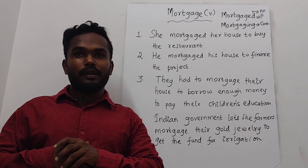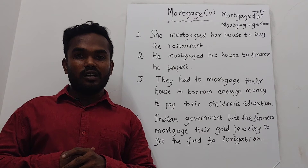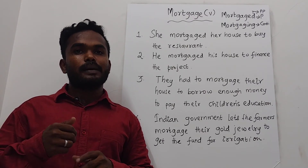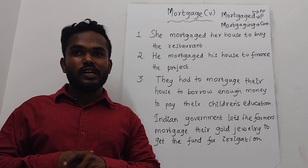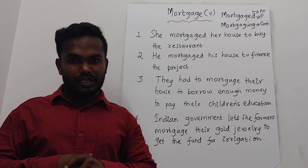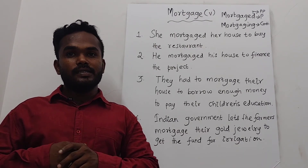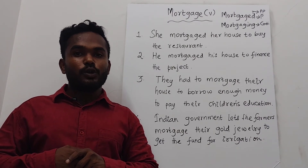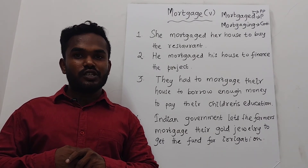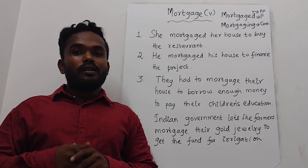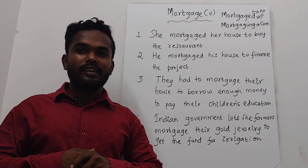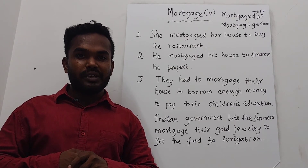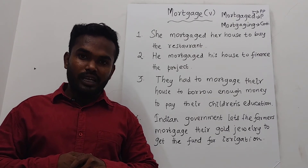The first example is: she mortgaged her house to buy a restaurant. The second example is: he mortgaged his house to finance the project. The third sentence is: they had to mortgage their house to borrow enough money to pay their children's education. The final sentence is: the Indian government lets the farmers mortgage their jewellery to get the fund for irrigation.